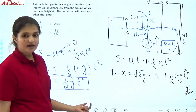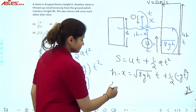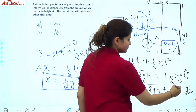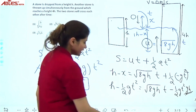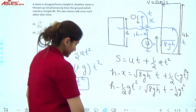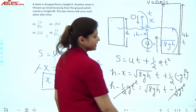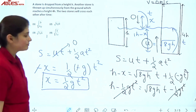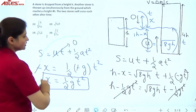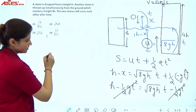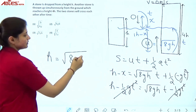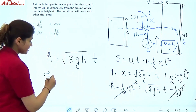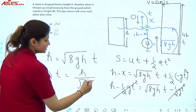Now the −½gt² terms cancel from both sides. We are left with h = √(8gh) × t. Therefore, time t = h / √(8gh).